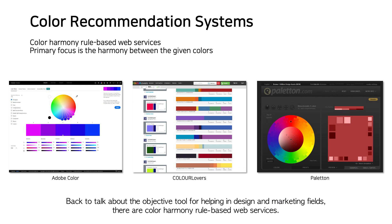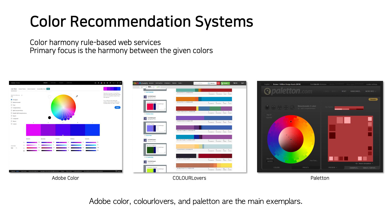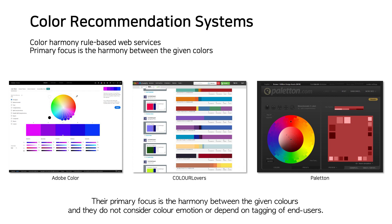Returning to objective tools for design and marketing fields, there are color harmony rule-based web services. Adobe Color, Color Lovers, and Palatone are the main examples. Their primary focus is harmony between given colors, and they do not consider color emotion or they depend on tagging by end users.